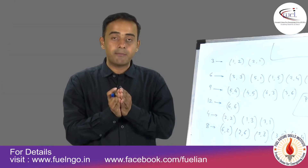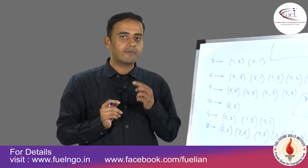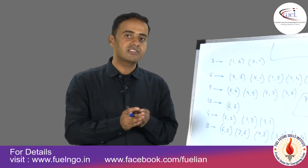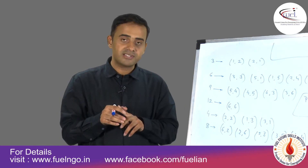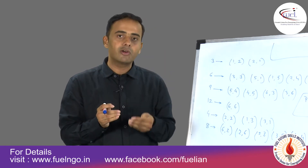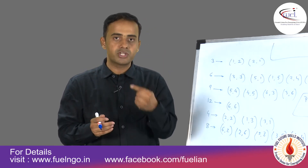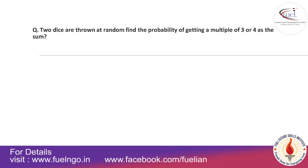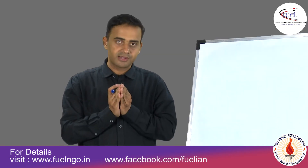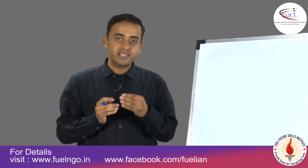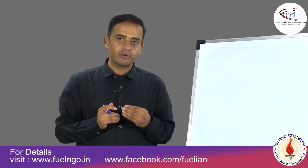This is a simple example of a two-dice question. Similarly, we can have questions for three or four dice. The fundamental approach remains the same: read the condition, jot down the number of favorable cases, and use that to generate the probability. Now let's take one more example for three dice, and then one for four dice.